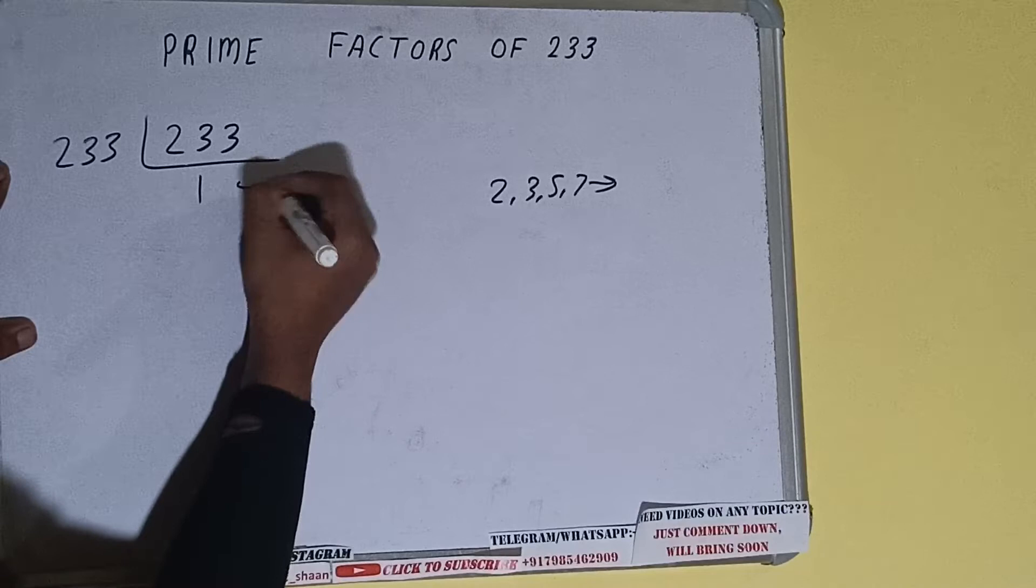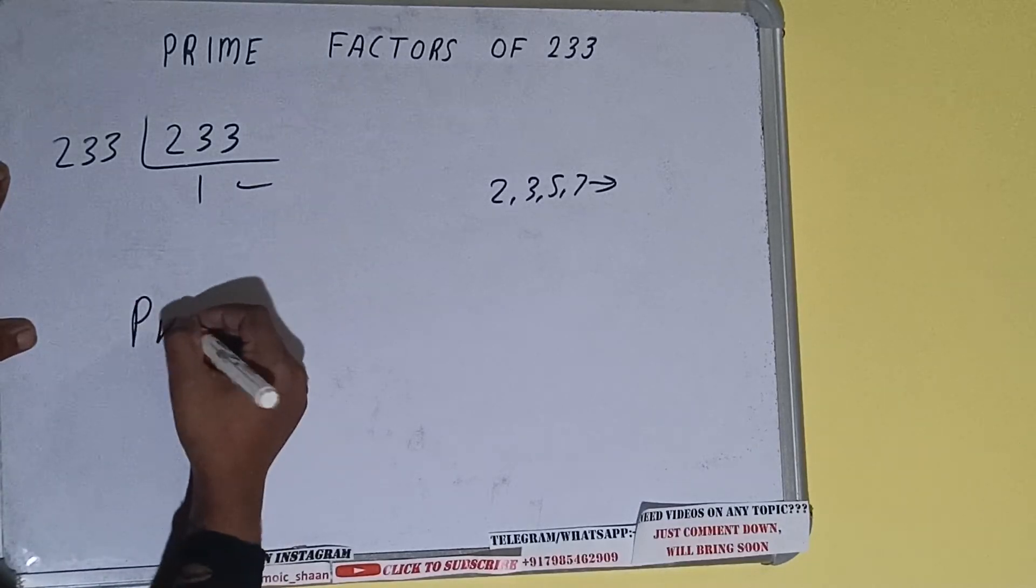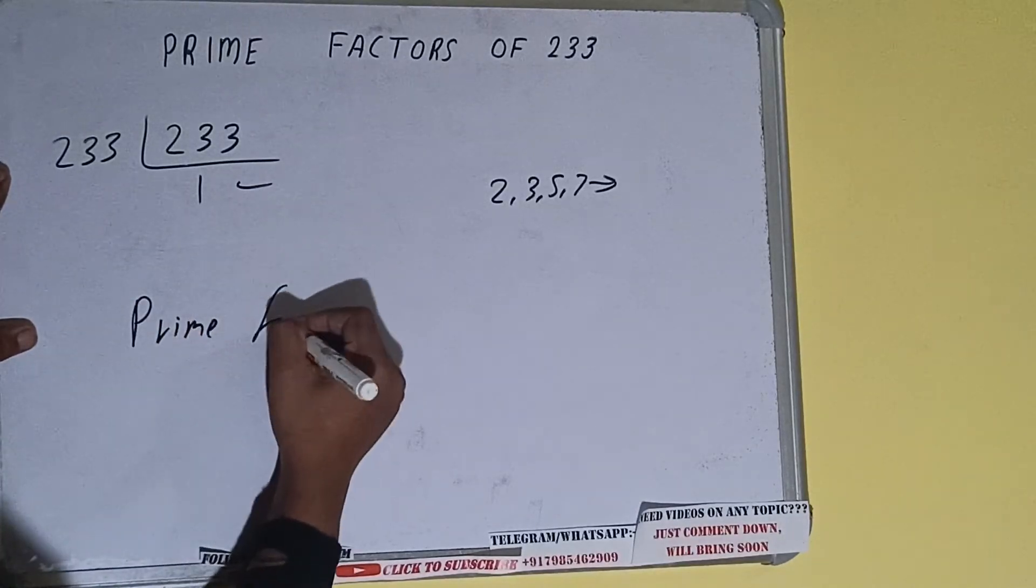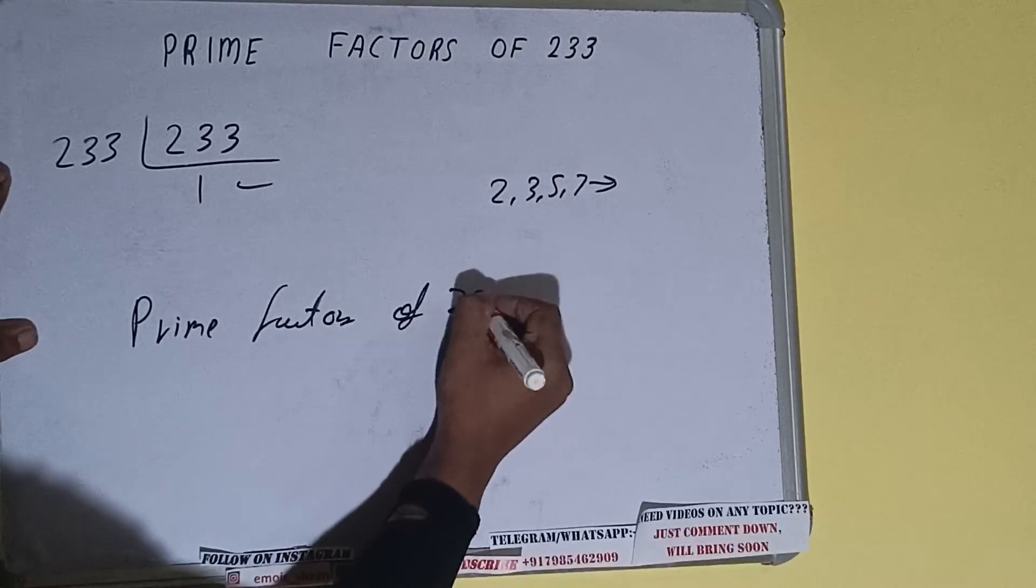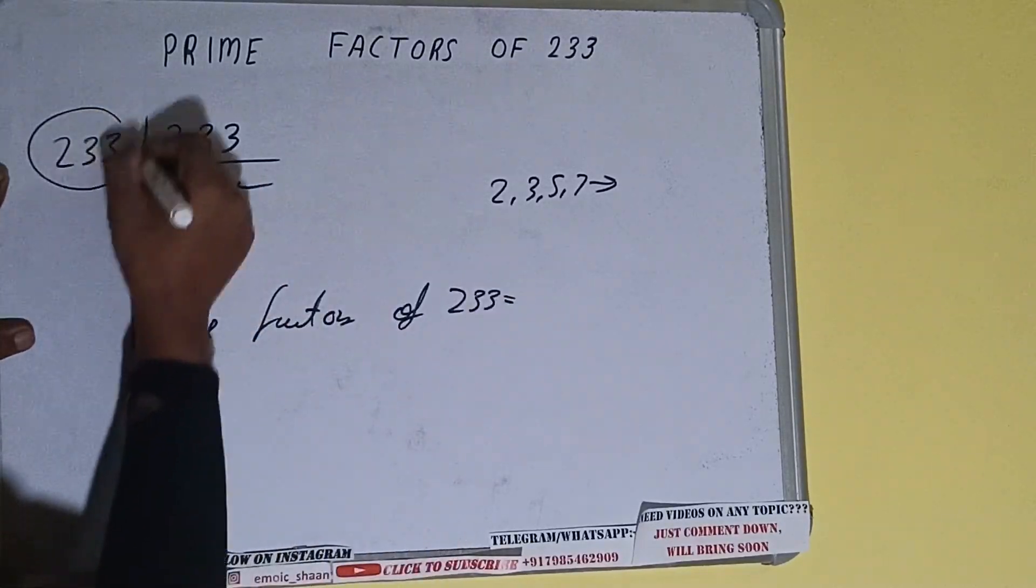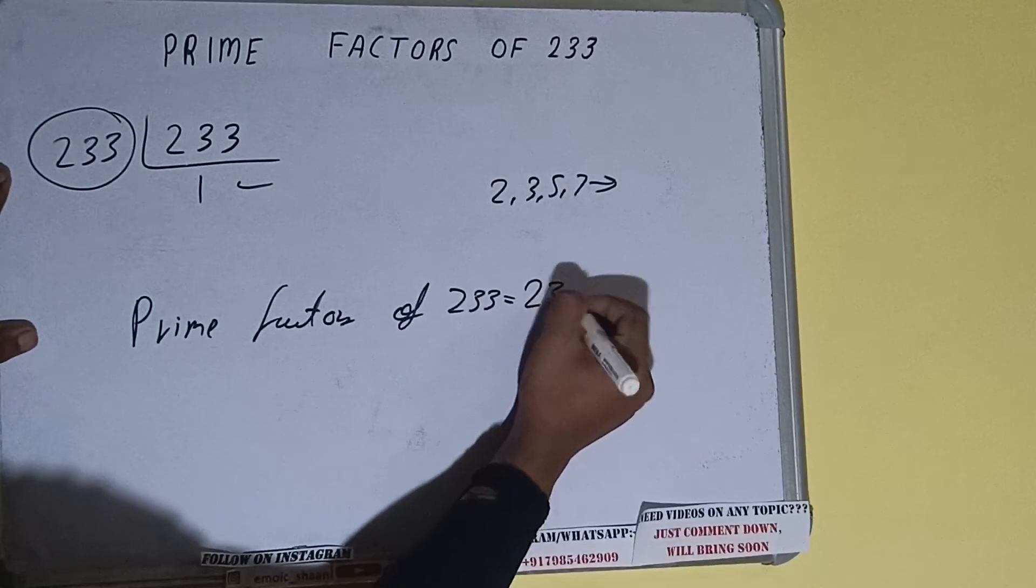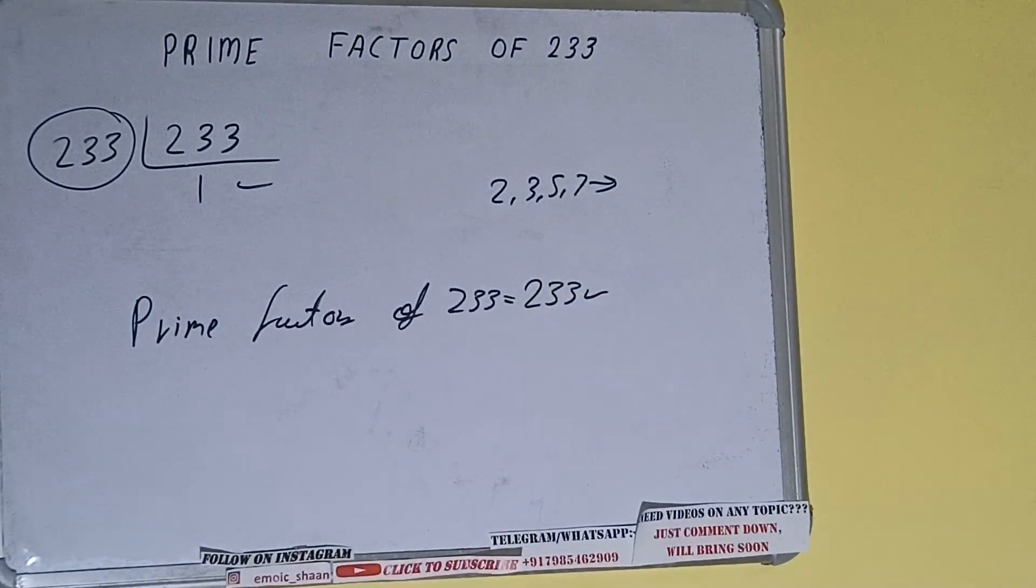And do one last thing, that is prime factors of 233 equals to whatever is on the left-hand side, that is 233. That will be the answer. So this is all about prime factors of 233.